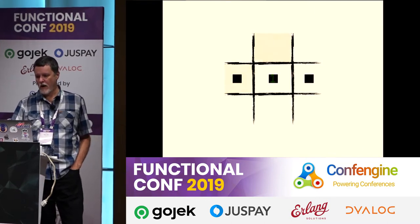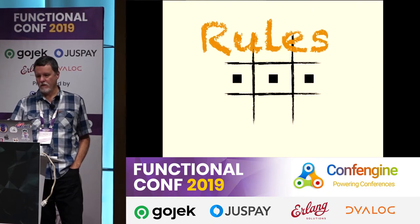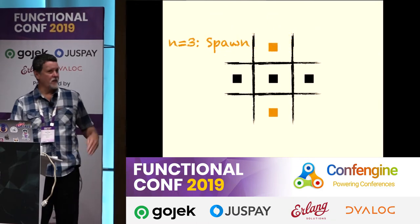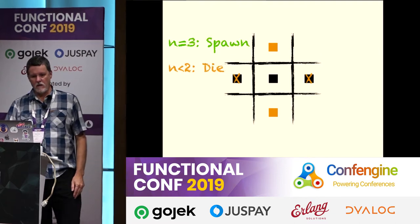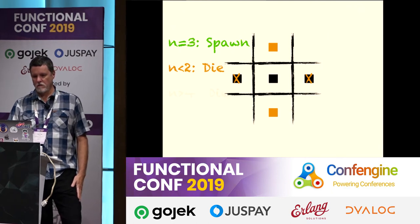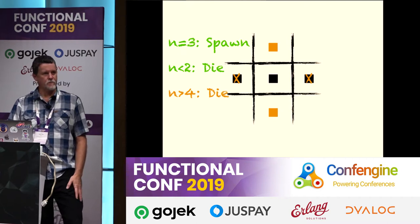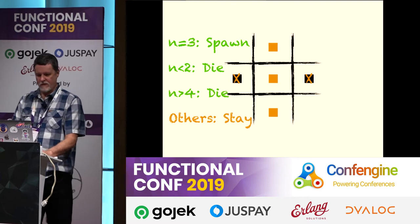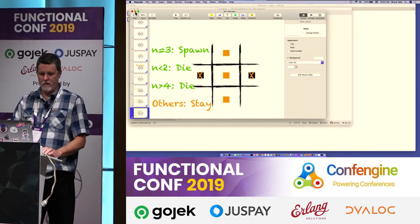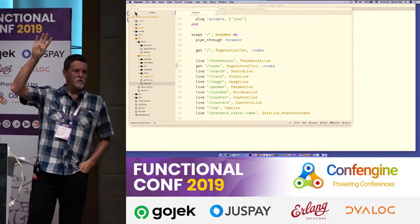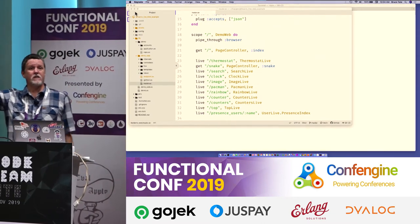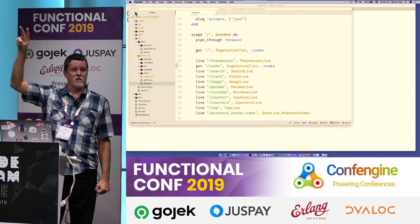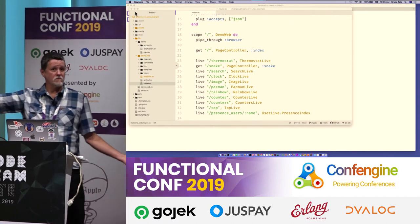This cell has two neighbors, and this orange cell has three neighbors. The rules are: if in the next generation any cell has exactly three neighbors, it will come to life. If it has fewer than two neighbors, it will die of loneliness. If it has more than three neighbors, it will die of overcrowding. Otherwise, it stays the same.